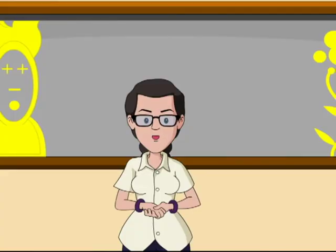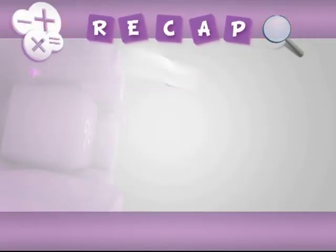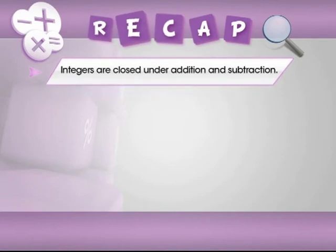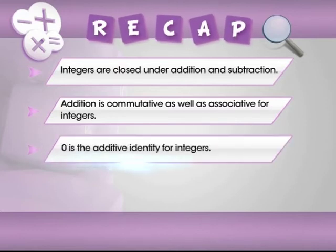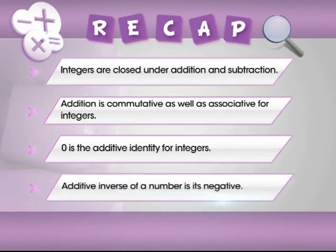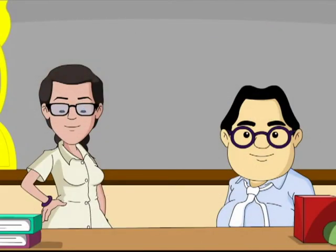Time for a recap: In this module we learned that integers are closed under addition and subtraction; addition is commutative and associative for integers; 0 is the additive identity for integers; and the additive inverse of a number is its negative. That's all for this episode of Math for Juniors — see you next time. Take good care. Goodbye!